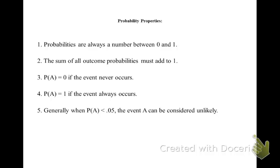Some common properties of probabilities: it's always a number between 0 and 1, so if you get back a negative number or a number bigger than 1, you need to recheck your work. The sum of all outcomes must add to 1, or 100%. An event equals 0 if it never occurs — this is the probability of the null set. The probability of an event equals 1 if the event always occurs; for example, the probability that the sun rises is 1. Generally, if your answer is smaller than 0.05, you could consider the event unusual or unlikely.